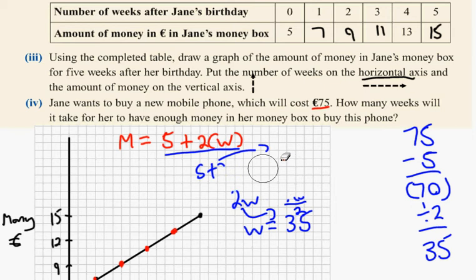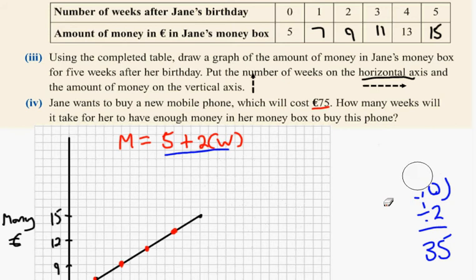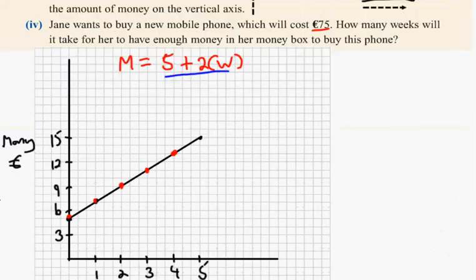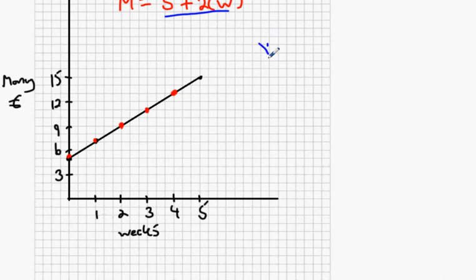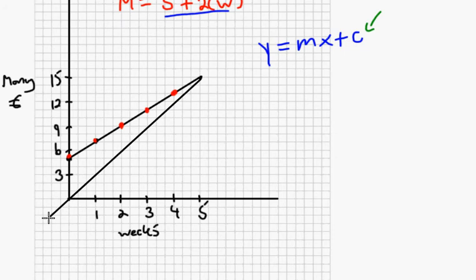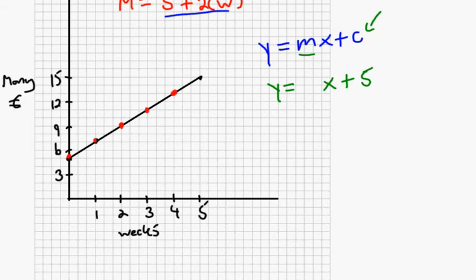I'm going to do one extra bit that's not in the question. Remember y equals mx plus c? What's the c value? Only when it's going through (0, 0) — but this time it's not. The c value is five. What's the m value?